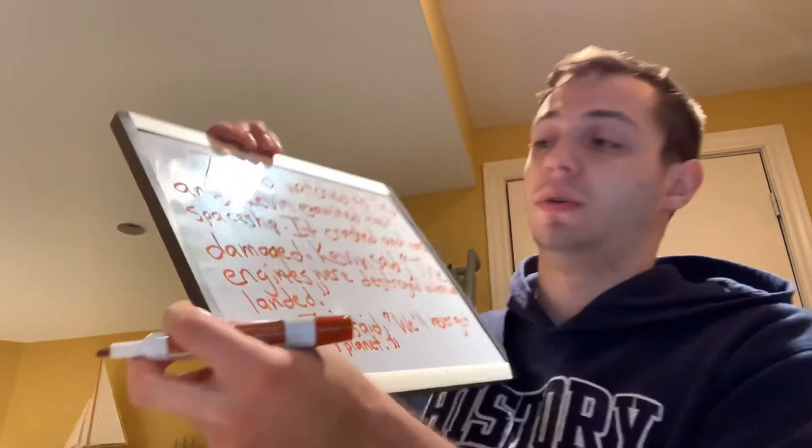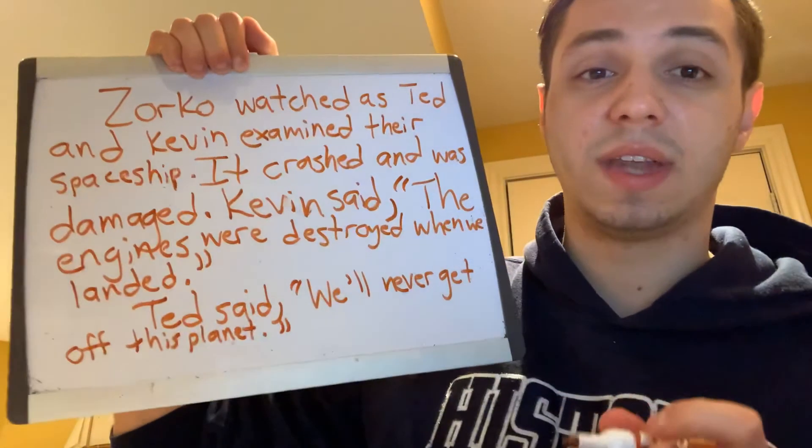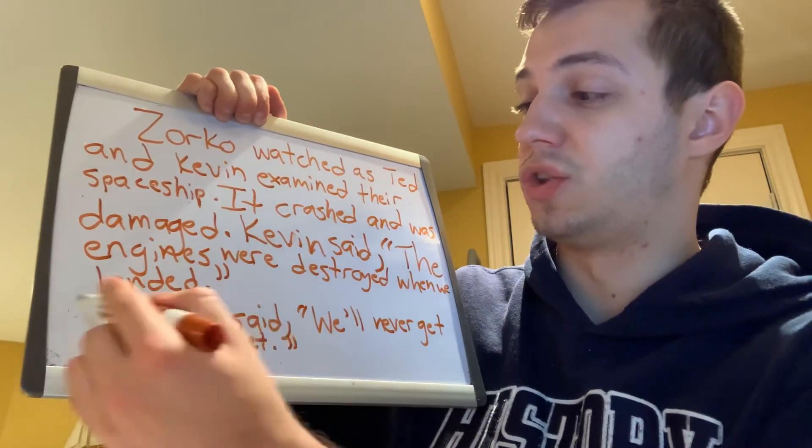I'll write: Ted said, comma, quotation marks. We will never get off this planet, period, closing quotation marks. Since now Ted is speaking, I have to start a new paragraph. Ted said, comma, quotation marks, capital W. We will never get off this planet, period, closing quotation marks.